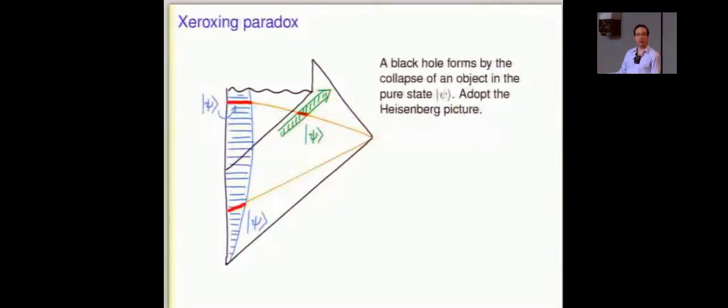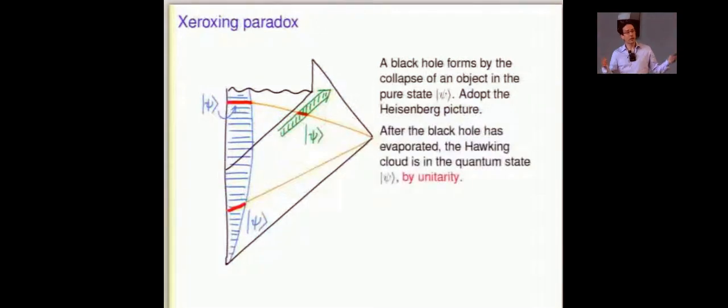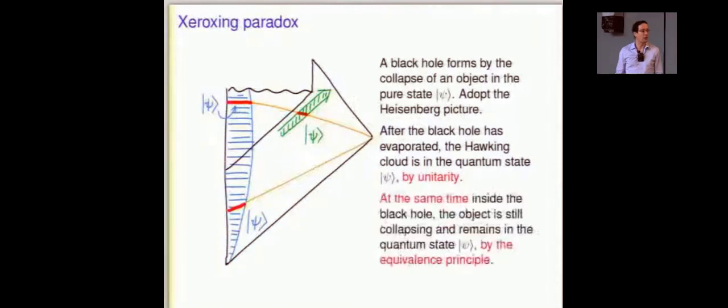At some early time, you have the star, which is about to collapse. It's in a pure state psi. At a later time, we're going to use the Heisenberg picture. So, psi just evolves into psi. So, after the black hole has evaporated, out here you have this green thing. That's the Hawking cloud that's moving out towards infinity. By unitarity, by assumption that we have a unitary S matrix, that's in the state psi. That Hawking cloud is psi.